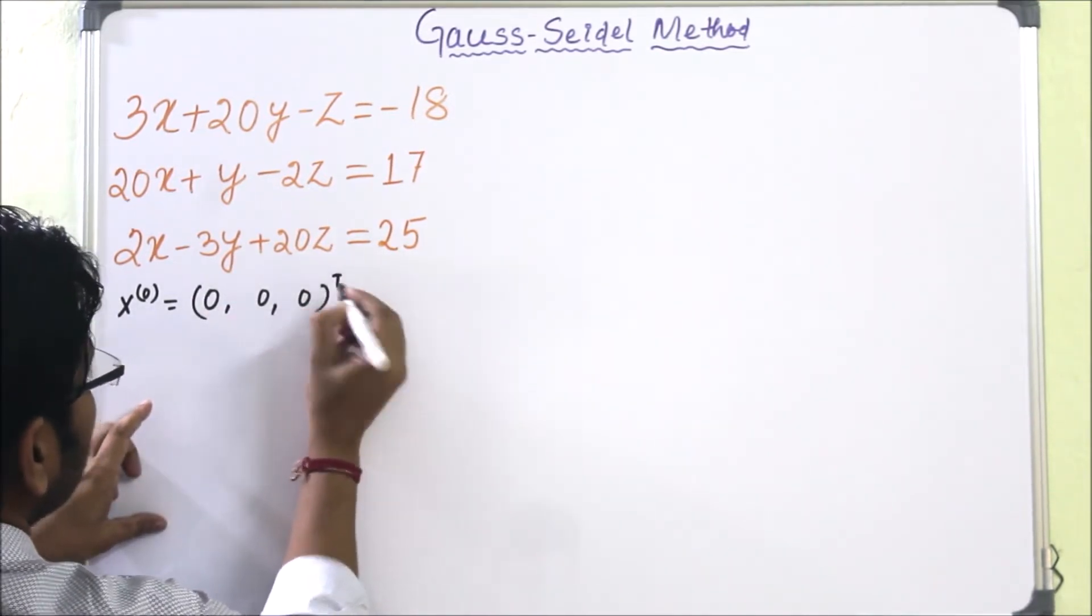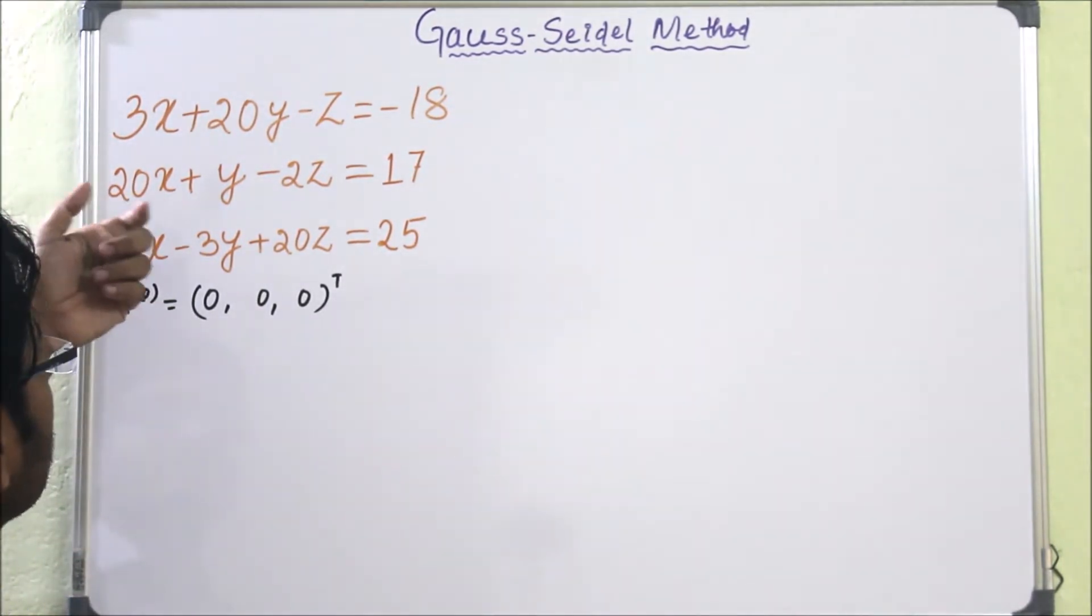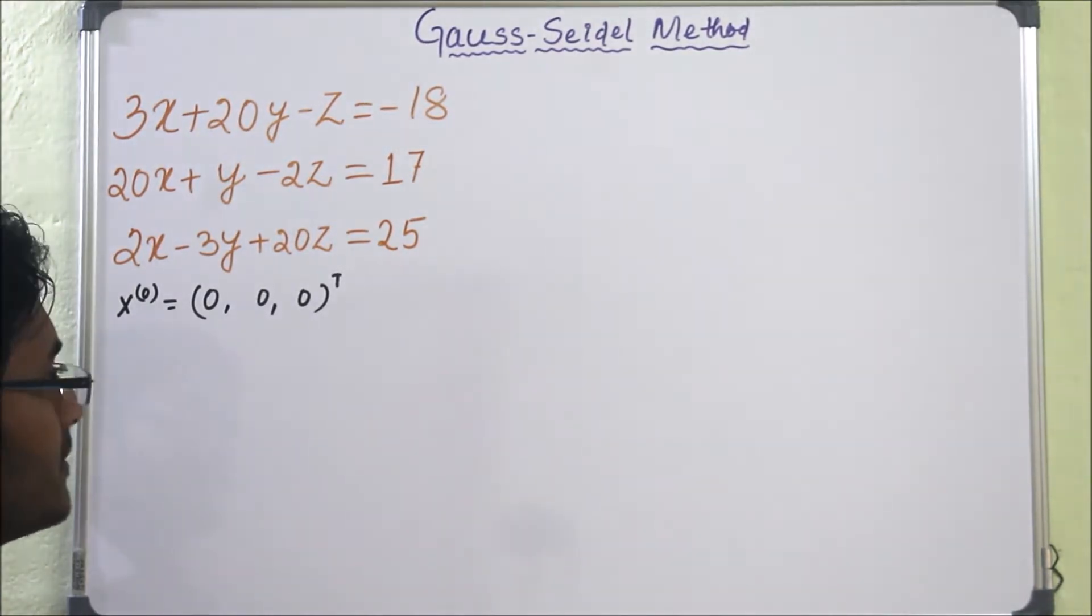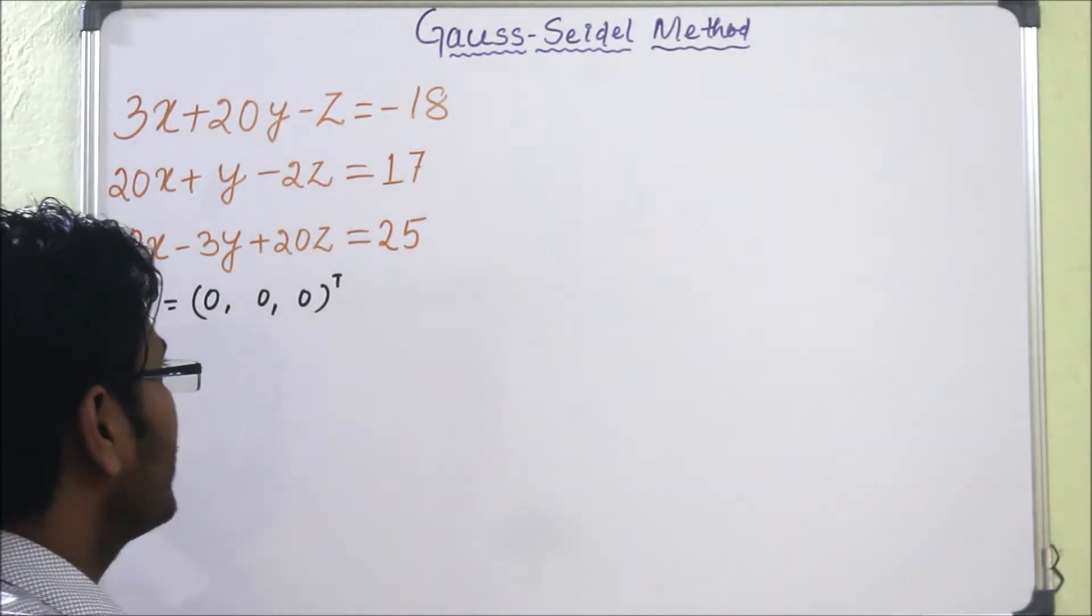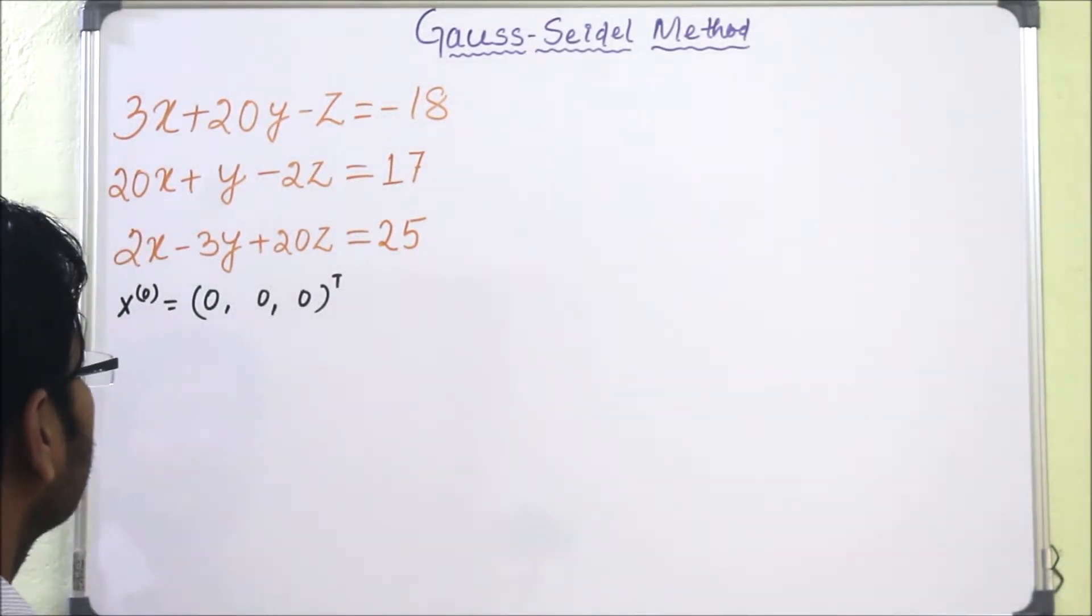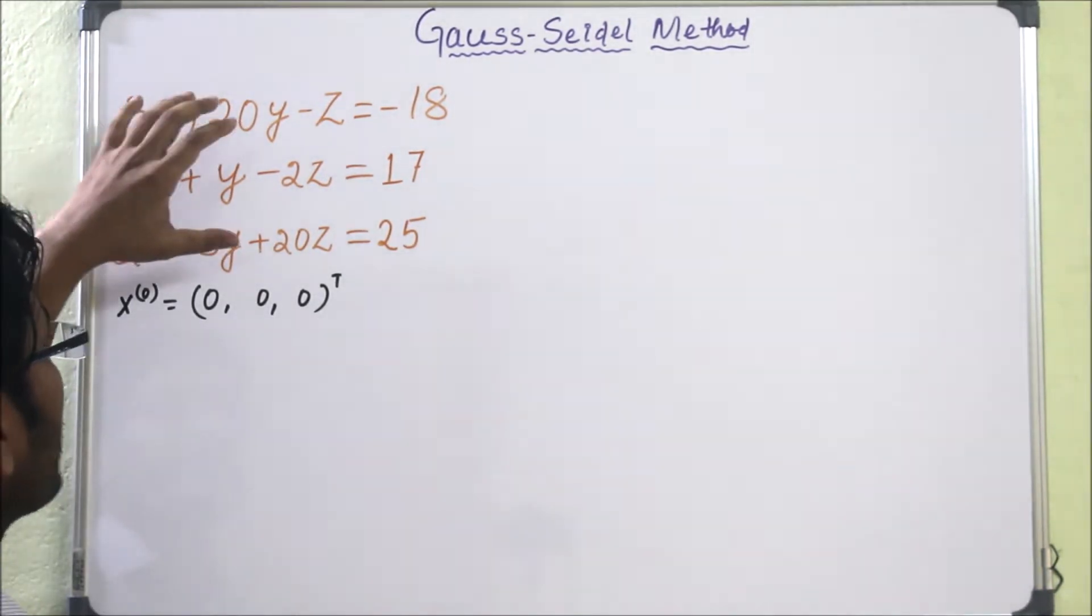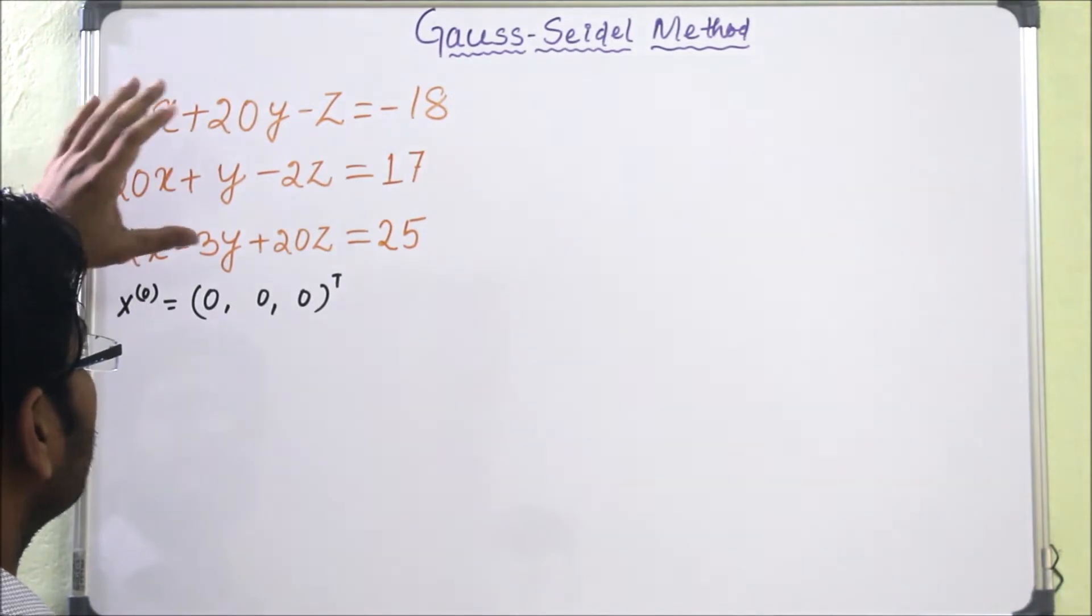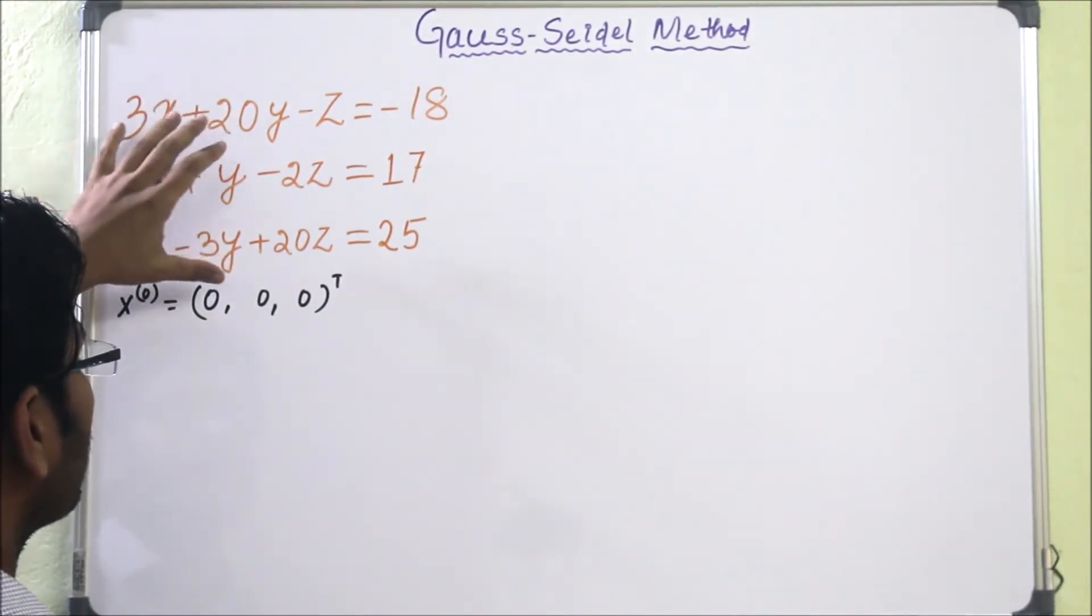The initial vector is (0, 0, 0) where x value is 0, y value is 0, z value is 0. Then we have to find x, y, z. Now if we recall the procedure, it says that before applying Gauss-Seidel procedure we have to check whether the system is diagonally dominant or not.